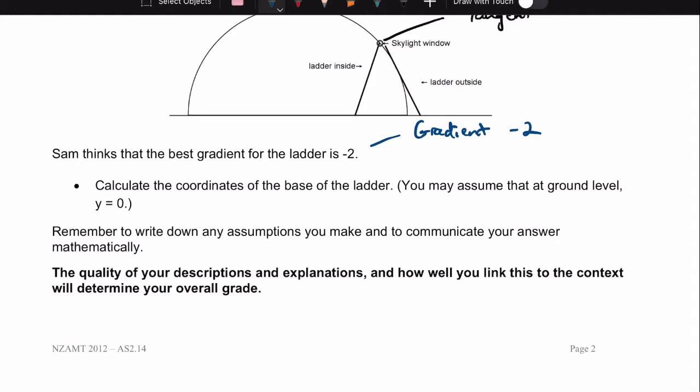Calculate the coordinates of the base of the ladder. That is this coordinate here. And assuming that the ground level y equals 0. So that means this coordinate will be x something 0.